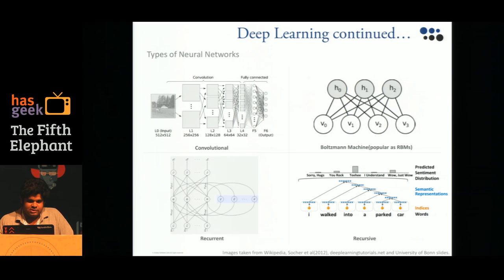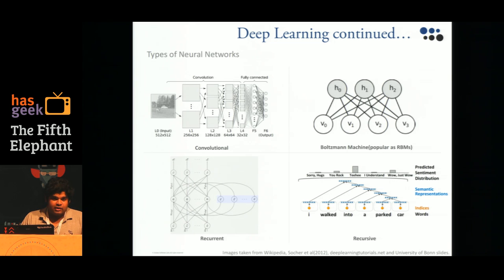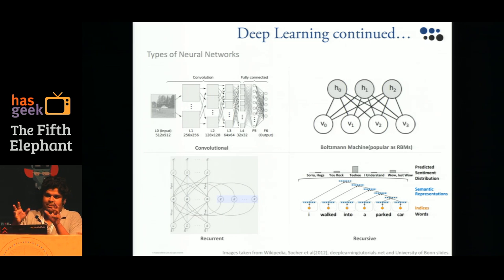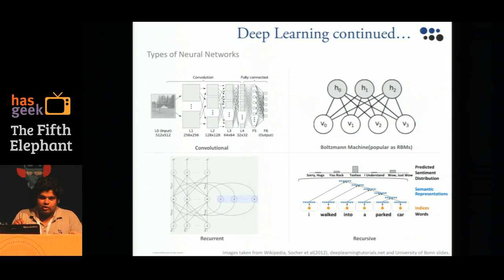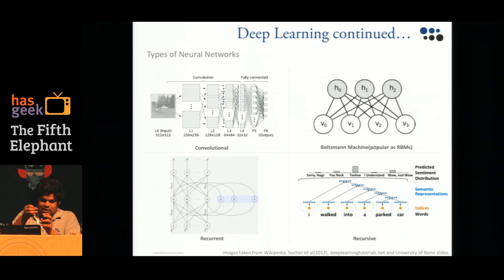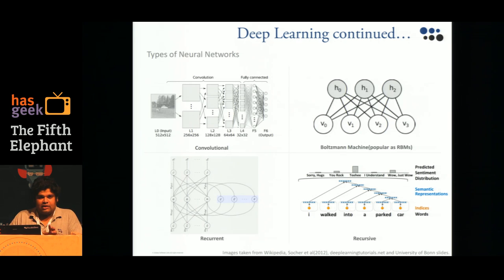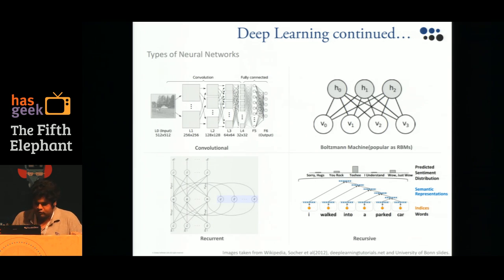Recursive and recurrent neural networks both model arbitrary-length sequences. Recursive models the sequence as a tree, while recurrent models it as a chain. Recurrent networks achieve increased accuracy using innovative neurons like LSTMs, which have their own memory that can pass information from one step to the next. These two network types are the state of the art in NLP. Since we work more with recursive networks, most of our implementations are recursive neural networks.